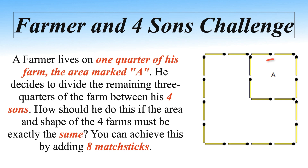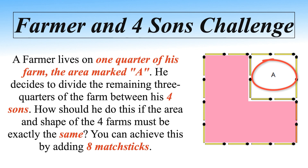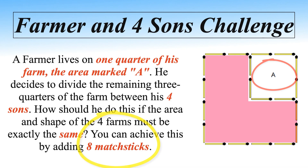A farmer lives on one quarter of his farm — the area marked A. He decides to divide the remaining three quarters of the farm equally among his four sons. The area and shape of each son's portion must be exactly the same. You can achieve this by adding exactly eight matchsticks — not more, not less. This is one of the hardest puzzles and requires out-of-the-box thinking. Feel free to pause the video and try before checking the solution.